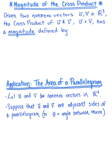Here we are looking at the magnitude of the cross product and how it is used to find the area of a parallelogram whose adjacent sides are defined by the two vectors that make up our cross product. So let's take a closer look.